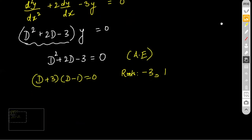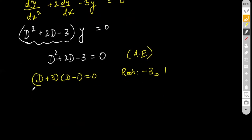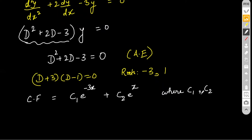From roots −3 and 1, the complementary function is CF = C₁e^(−3x) + C₂e^(x), where C₁ and C₂ are arbitrary constants. These constants are found using initial or boundary conditions provided in the problem. Remember: an nth-order differential equation always has n arbitrary constants.